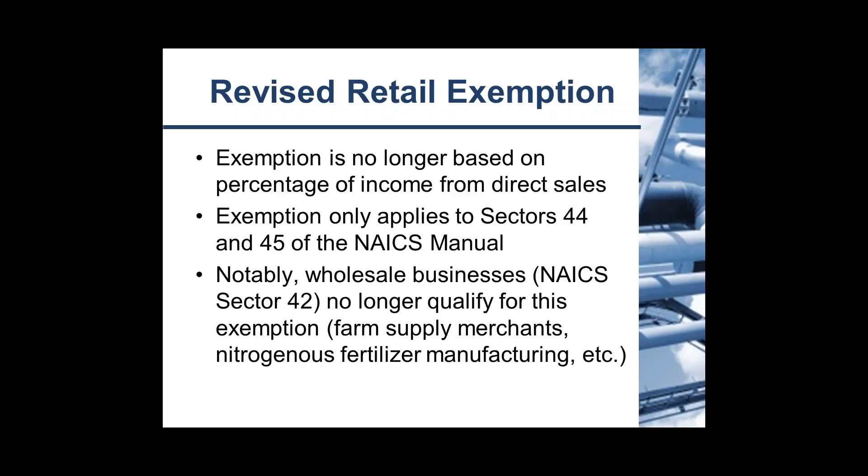It's now based on what sector your business falls under. If you're part of NAICS sector 44 or 45, you would classify for this retail exemption — places like gas stations that have large quantities of highly hazardous chemicals on hand but give them out to the end user in very small quantities, like 20 to 30 gallons maximum at a time. Some people who were taking advantage of this exemption fell under the wholesale business category, which is sector 42. They will no longer qualify for this exemption. Those would be farm supply merchants selling thousands of gallons of anhydrous ammonia at a time for fertilization purposes, so they would no longer be exempt.